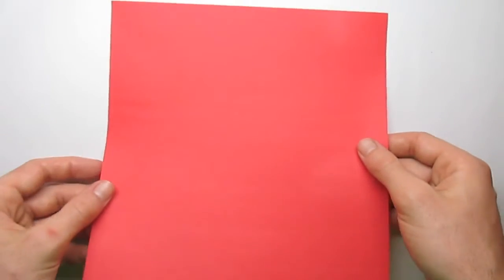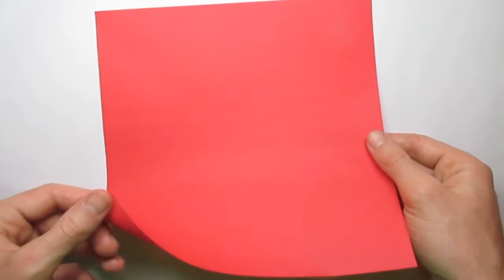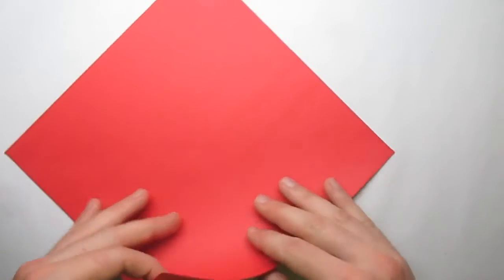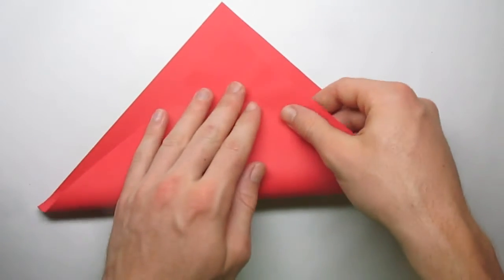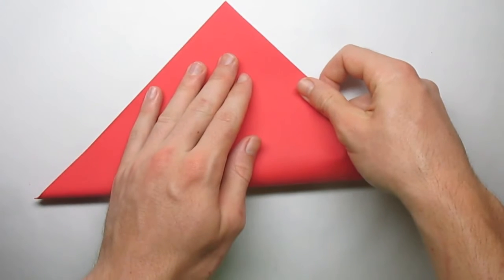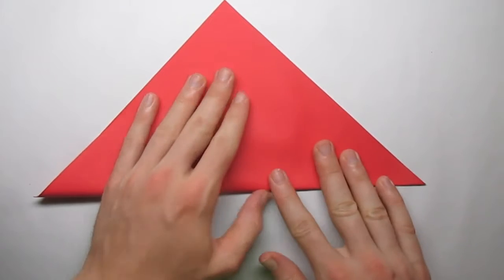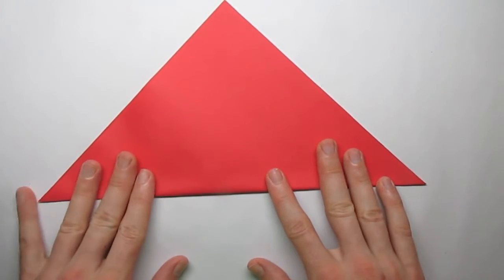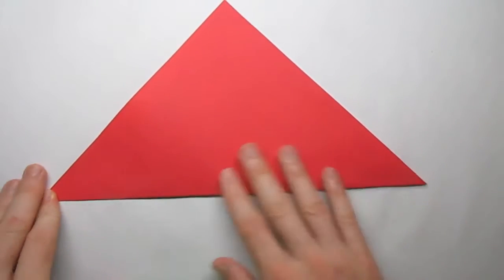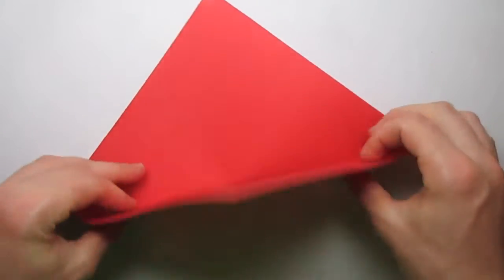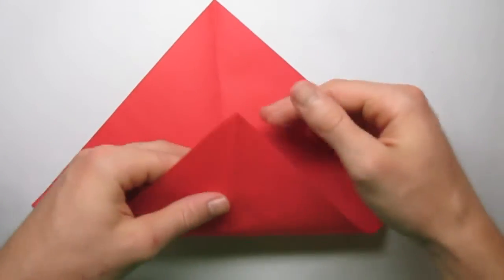So I used this printer paper for this model, 8.5 by 8.5, it works good. So we're going to make what's called a square base. Fold it diagonally, unfold it, do that again.